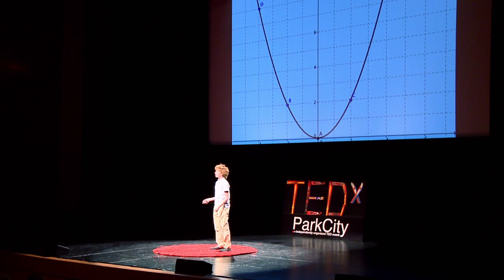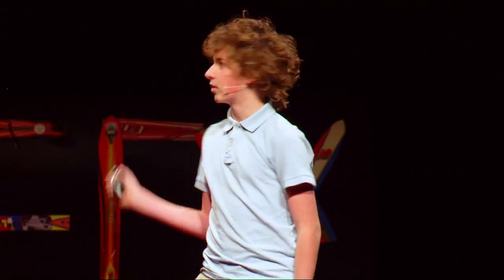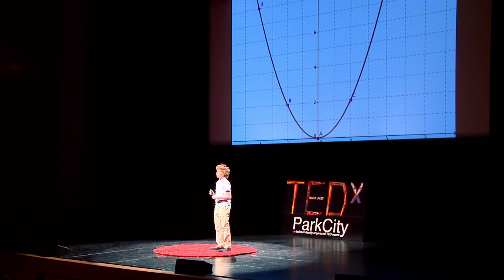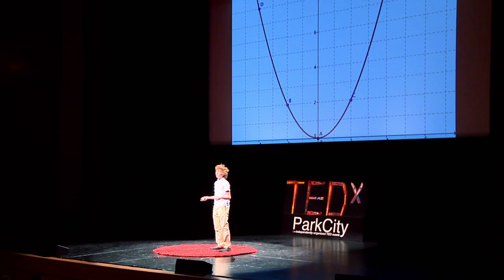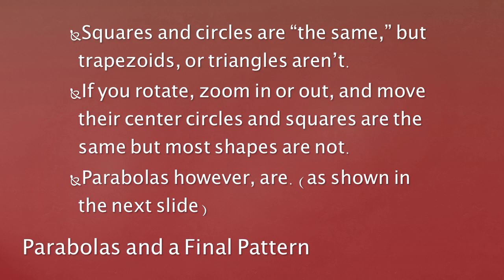Also, if it's y equals 3 halves x squared — this is 1 half x squared, sorry — what you can do is multiply by 3 and both sides by 2. So you move over 2, up 6; over 2, up 18; et cetera. You might also notice that this is the exact same graph as y equals x squared, just bigger. And actually, all parabolas are the same.